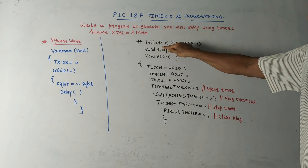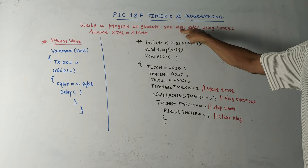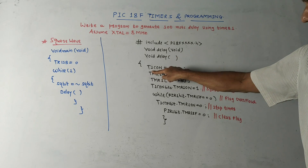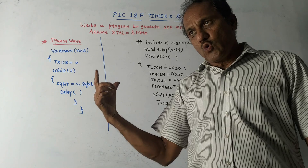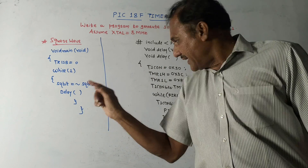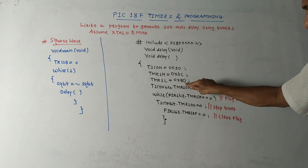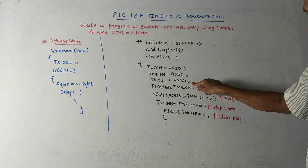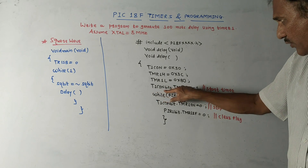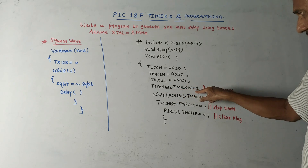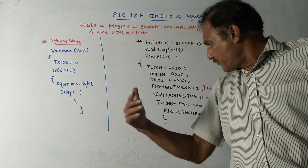These are the steps usually used while writing timer programs. First is #include to include the header file. The program generates a delay of 100 milliseconds. First instruction: T1CON control register is loaded with 0x30 to get maximum pre-scaling of 1:8, as already discussed. Then load the higher byte with 0x3C and lower byte with 0xB0 - these are standard instructions similar to 8051. To start the timer, use the instruction: T1CONbits.TMR1ON = 1.